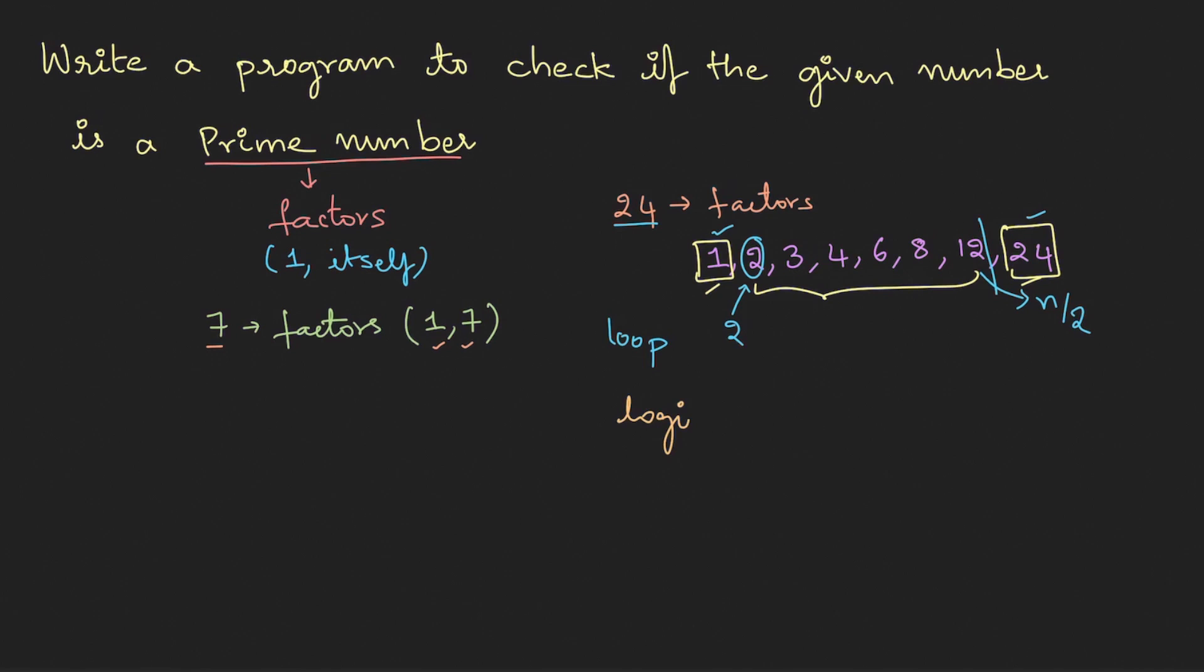Inside the loop, the logic is if the given number n is divisible by any of these numbers, I'll use the modulus operator. If the modulus operator gives 0, that means this particular number is divisible by i. In such situation, I can say it has a factor other than 1 and 24.